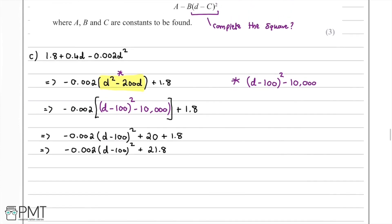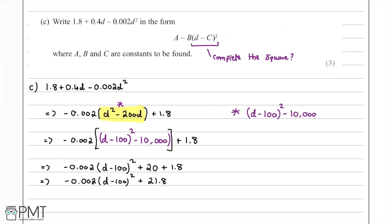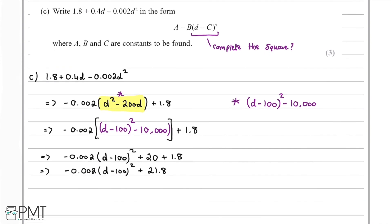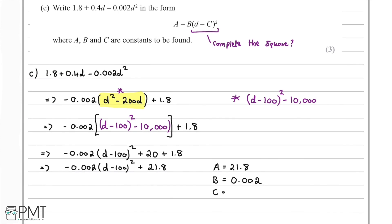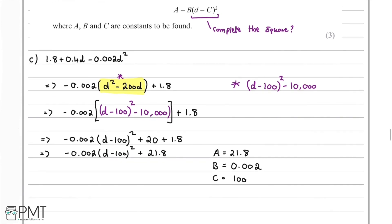Comparing with the required form a − b(d − c)², we can identify the constants: a = 21.8, b = 0.002, and c = 100.